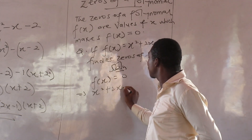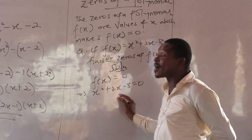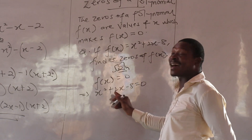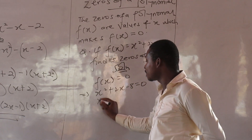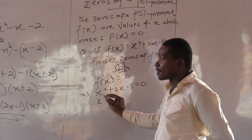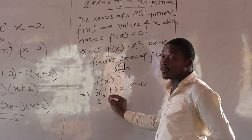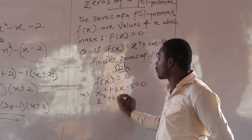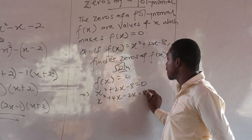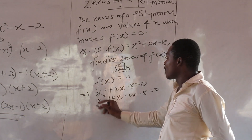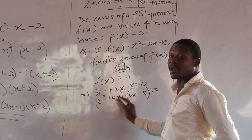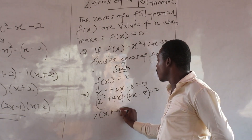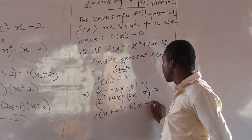x squared plus 2x minus 8 equals zero. It's a normal quadratic. I have to solve this, so what two numbers will I multiply? I need to find the right factors. So firstly, 4x and negative 2x, giving minus 8. The assumption is made to factor it.